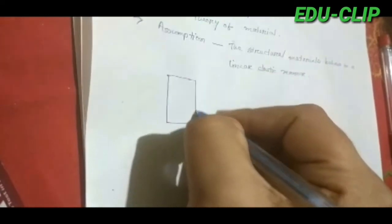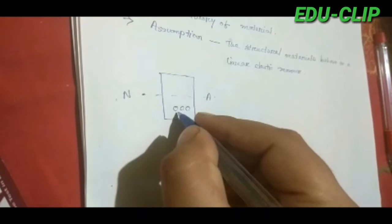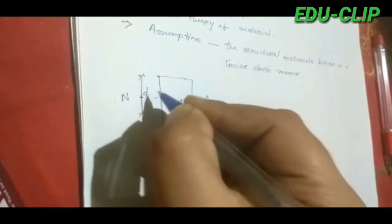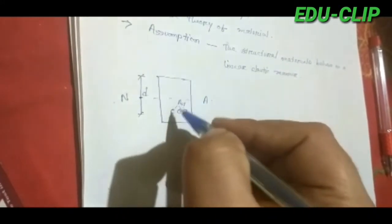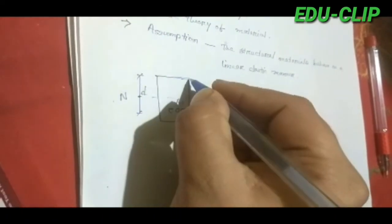To understand this theory properly, suppose we assume a section of a beam — a rectangular beam section. This has a neutral axis. If we consider steel reinforcement here, the area of this steel reinforcement is denoted by A_st. D is the effective depth, which is the distance from the steel reinforcement to the extreme fiber of the concrete section.